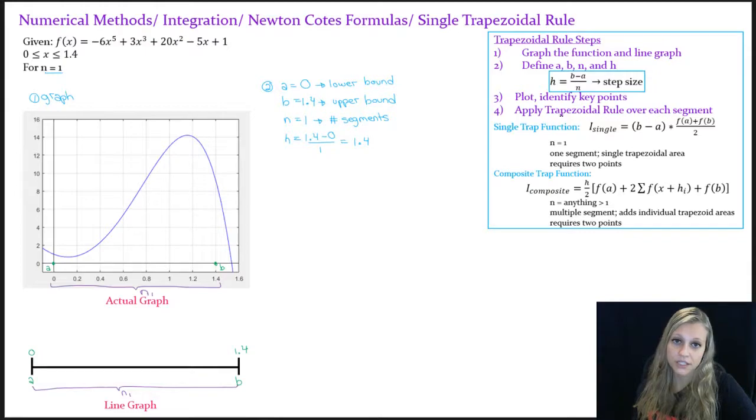My fourth step is to apply the trapezoidal rule over each segment. And since we only have one segment, this is a great example of the single trapezoidal function. So I'm going to use this equation - oh, that's a really crooked line. Alright, let's try this again. I'm going to use this equation right here.